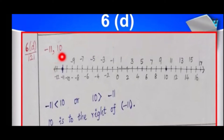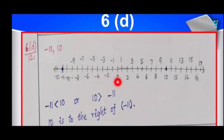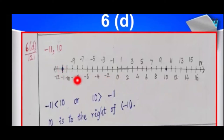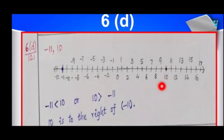Minus 11 and 10. Minus 11 is a negative number, 10 is a positive number. So we have to mark both numbers. 0 is here — to the left side of 0 there are negative numbers, to the right side of 0 there are positive numbers. Mark minus 11 and plus 10. Plus 10 and 10 are equal. We can easily say that 10 is to the right side of minus 11.